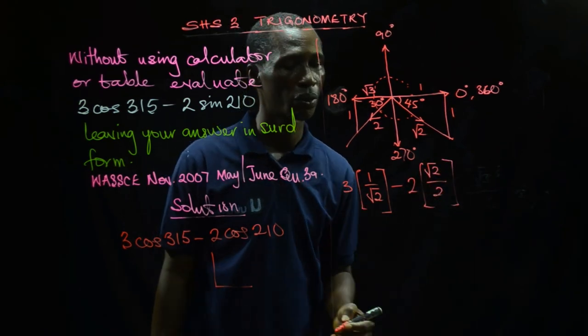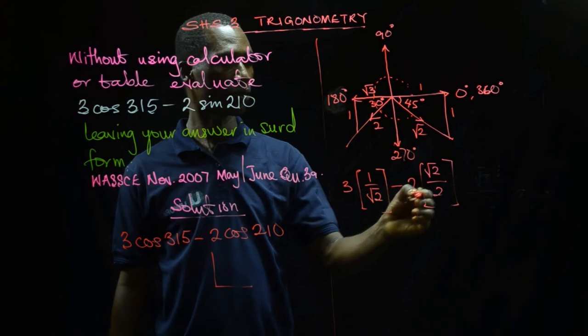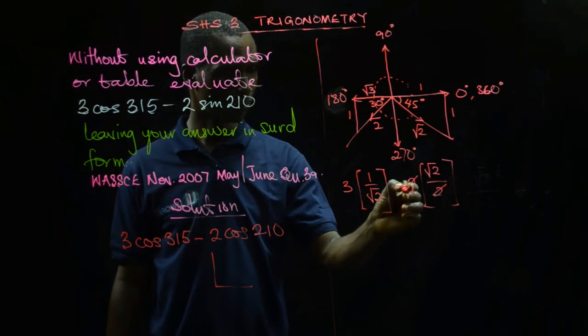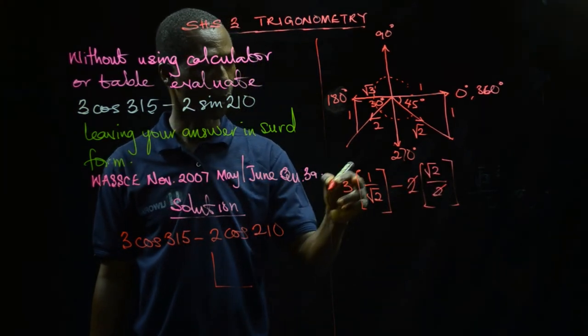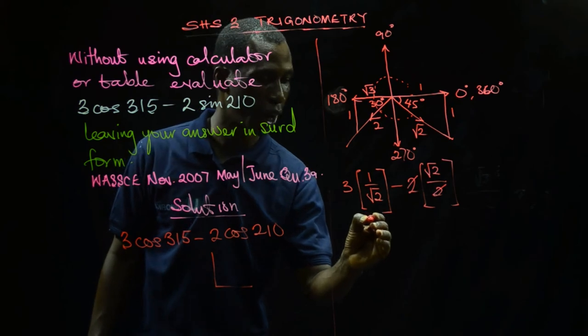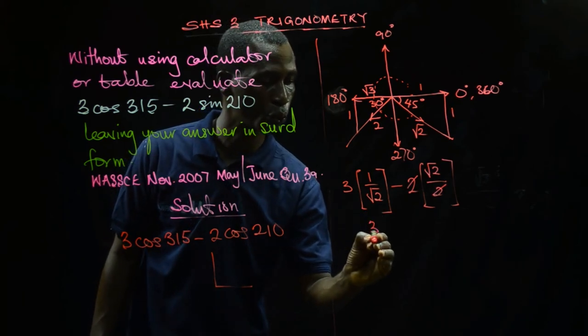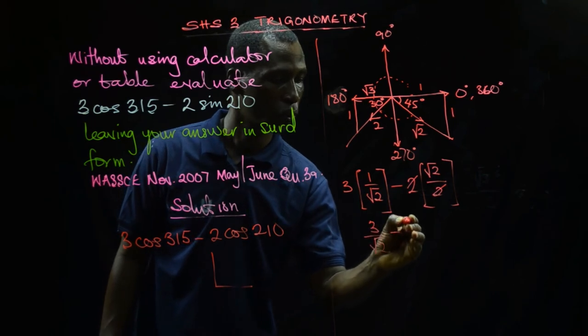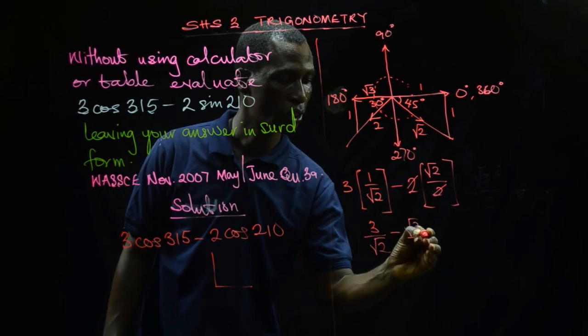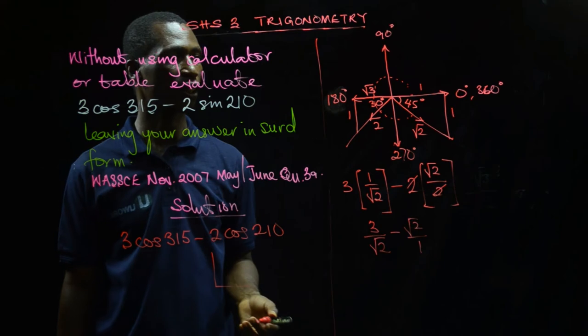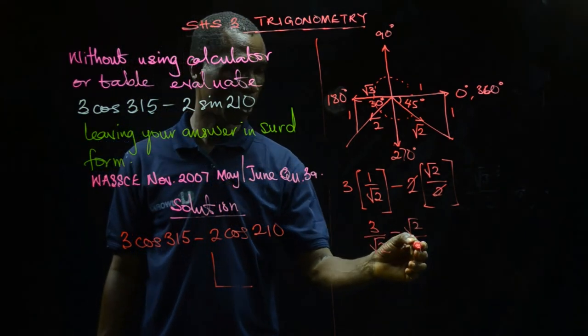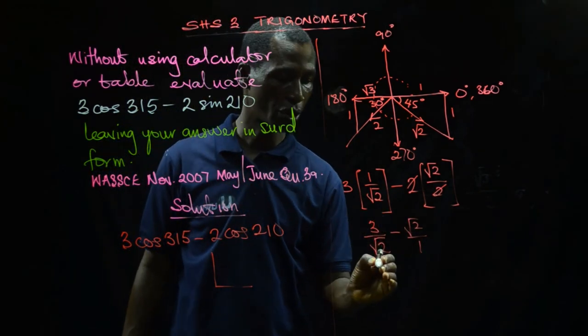What happens is this 2 will cancel this 2, and this √3 will multiply. So I'm going to have 3/√2 minus √3/1, which is over 1. This one has a single fraction, so I have 1 times 3 gives me 3.